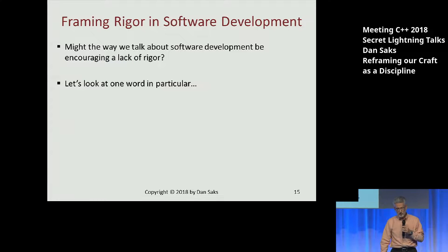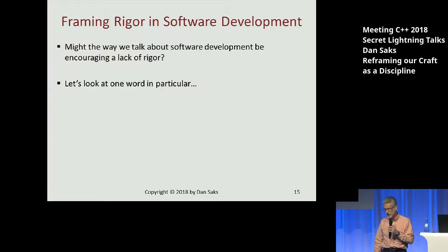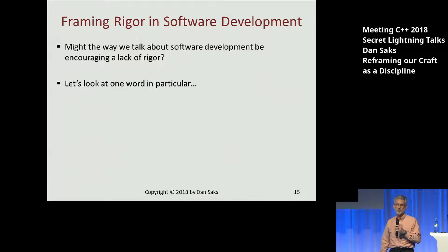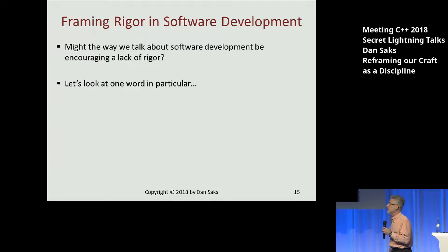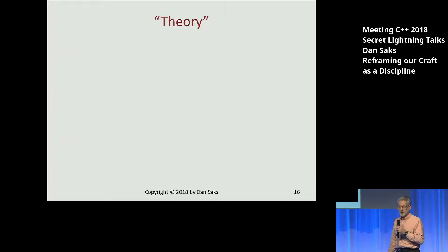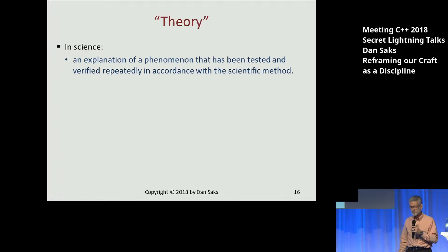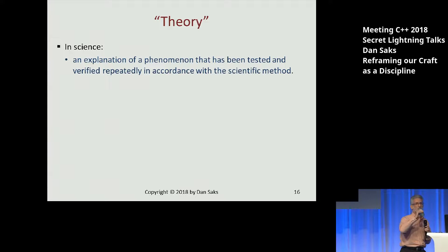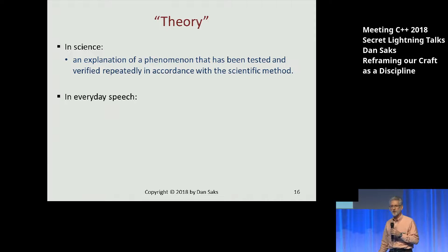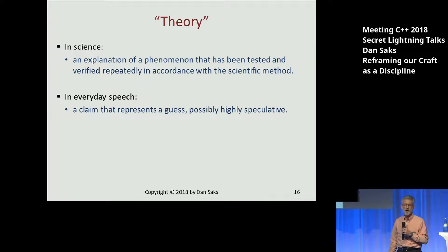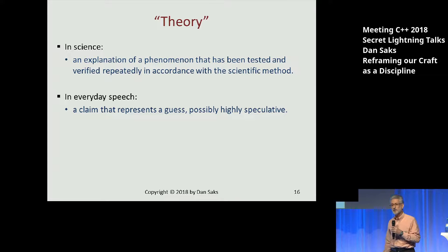So let's think about this with respect to the rigor of software development. Might the way we talk about software development be encouraging a lack of rigor? I'll pick on one word in particular: theory. In science, what's a theory? It's an explanation of a phenomenon that's been tested and verified experimentally. But in normal everyday speech, what's a theory? It's a claim that's essentially a guess — possibly highly speculative. People say 'I have a theory about that.' No evidence, no testing. I have a theory.